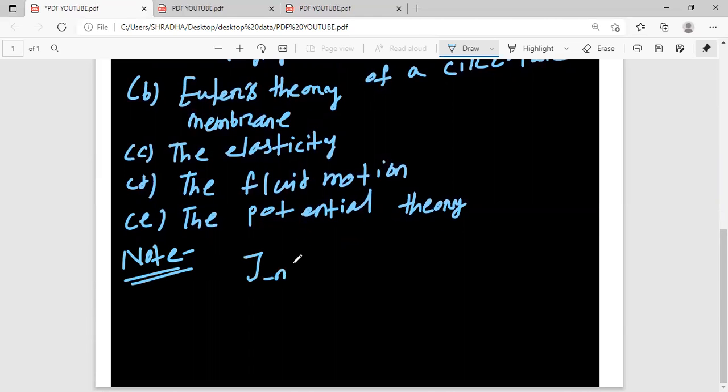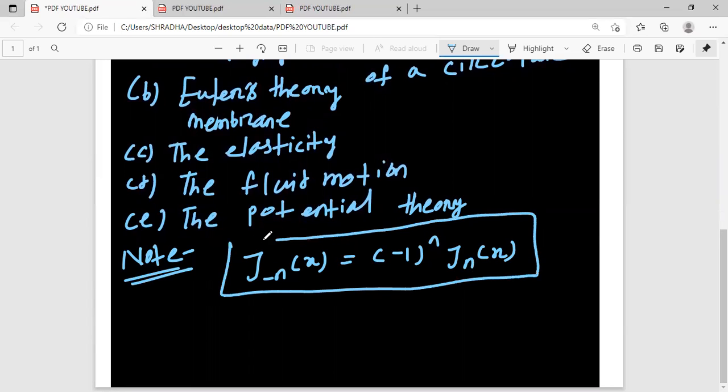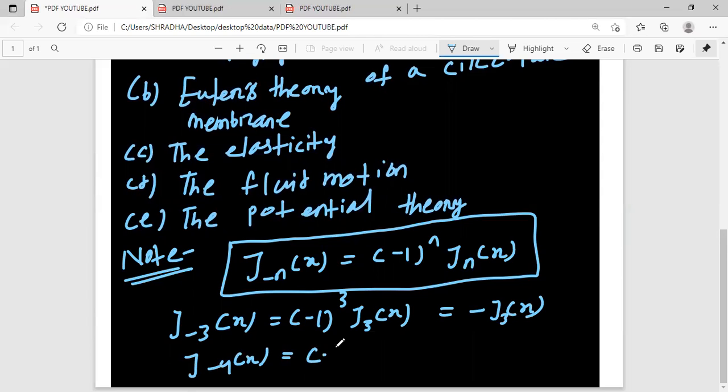Suppose J minus N X, the formula is minus one to the power N times JN of X. So suppose the question is J minus three of X. That's minus one to the power three J three of X, which means you get minus J three of X. And J minus four X, that's minus one to the power four J four X, which equals J four X.